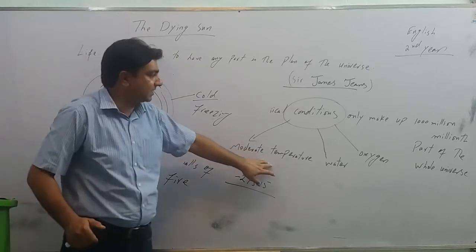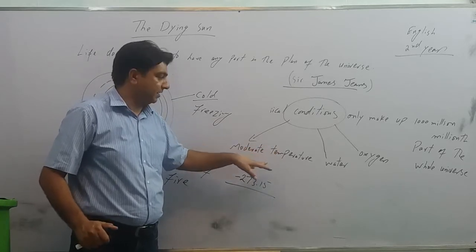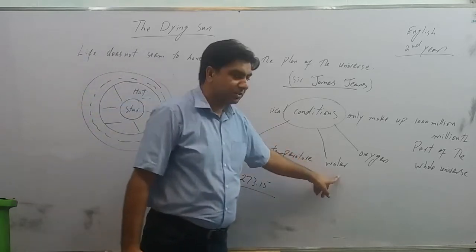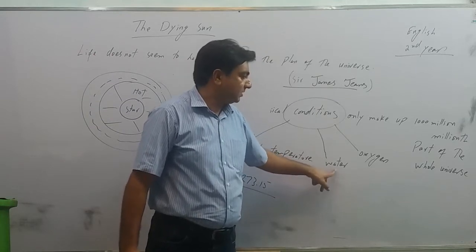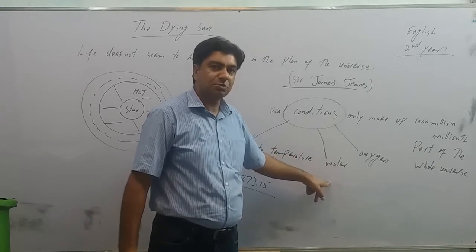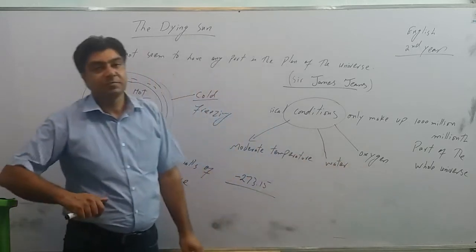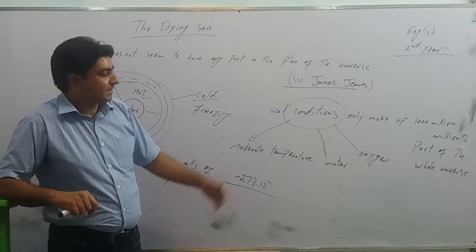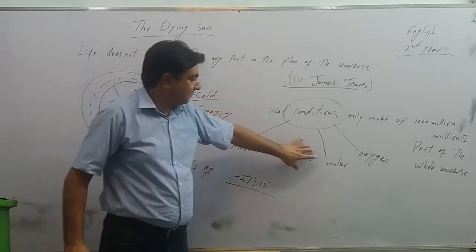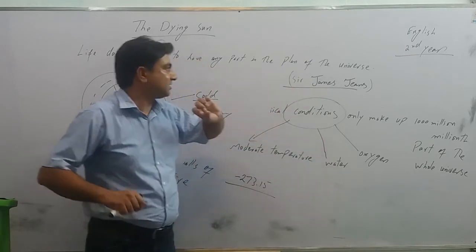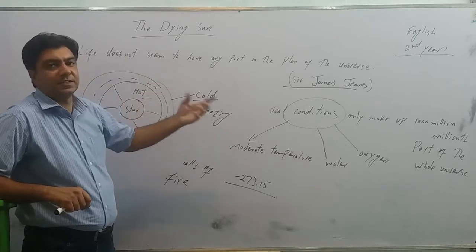So this is the first physical condition that is primary requisite of life on any planet. The second one is water, availability of water. As far as we know of some other planets in our solar system, we couldn't find availability of water there. The third one is oxygen. There should be oxygen. On the basis of these prerequisites, Sir James Jeans says that there is very little possibility of life anywhere else in the universe.